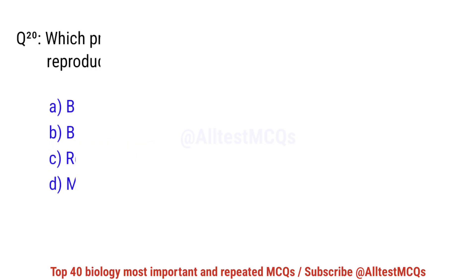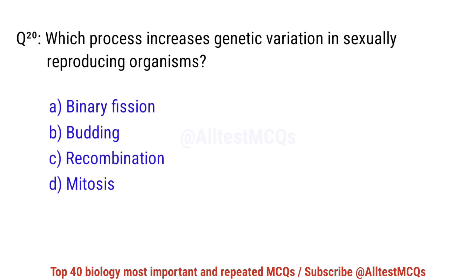Question number 20. Which process increases genetic variation in sexually reproducing organisms? The right option is C: Recombination.